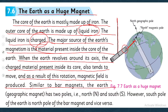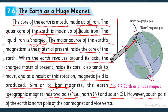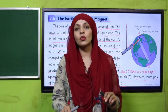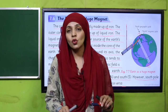Similar to bar magnets, the Earth's geographic magnet has two poles. Just as a bar magnet has two poles, geographically the Earth also has two poles: north and south. However, the south pole of the Earth is the north pole of the bar magnet, and vice versa. But if this is the north of the Earth, then the bar magnet's south will face it — why? Think quickly.